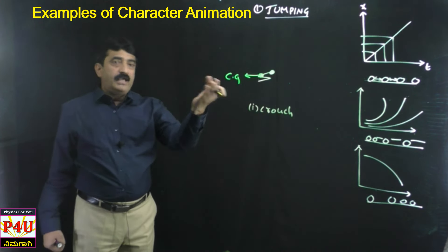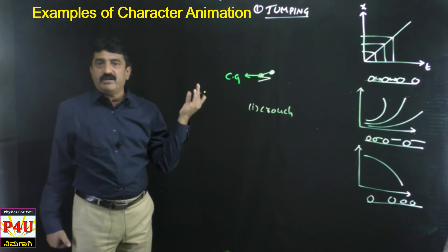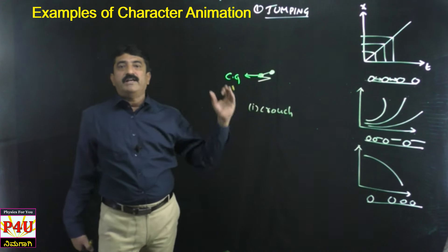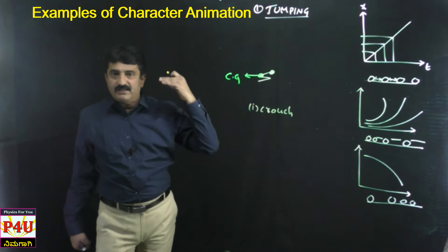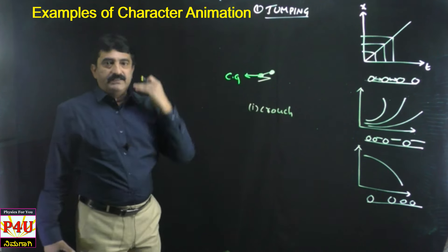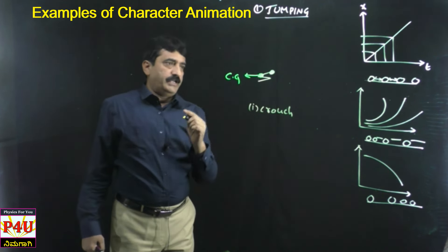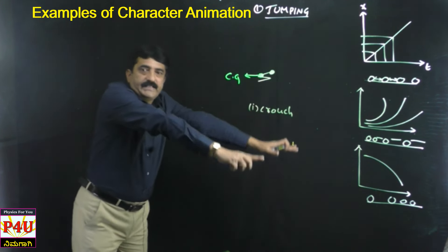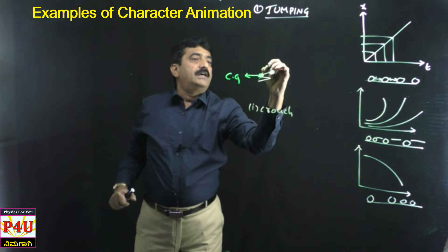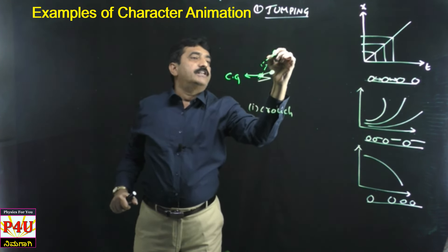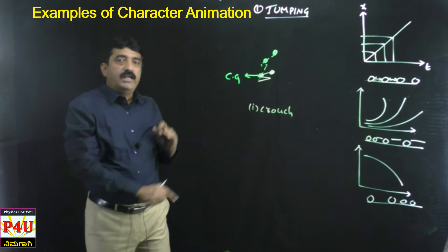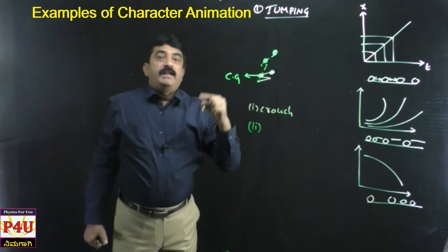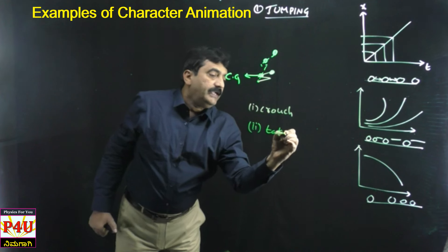There is so much physics in animation! The center of gravity can be calculated using the formula: (m₁x₁ + m₂x₂ + m₃x₃) / (x₁ + x₂ + x₃). Initially the character is in the crouch position. Afterwards, she moves into the take-off position — almost ready to leave the ground, her feet still in contact with the earth.